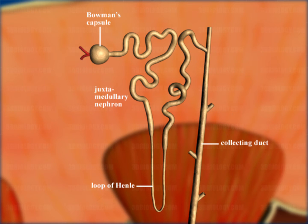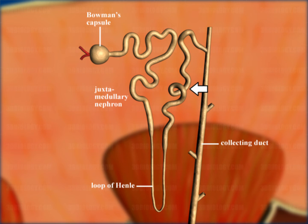The renal tubule is made up of three parts: the proximal convoluted tubule, the part near Bowman's capsule located in the cortex of the kidney; the loop of Henle in the renal medulla, with a descending and then ascending limb; and the distal convoluted tubule, named because it is far from Bowman's capsule.